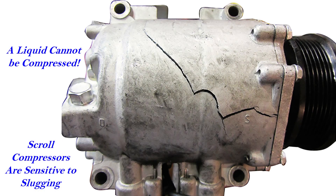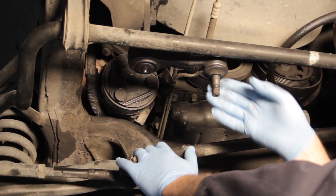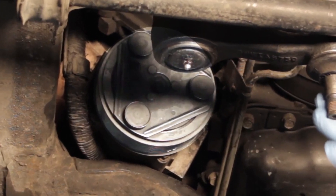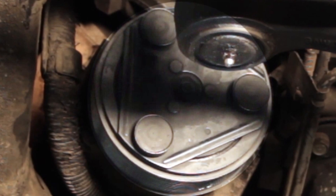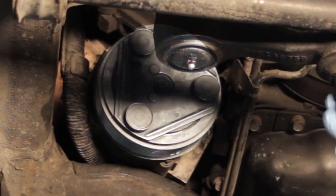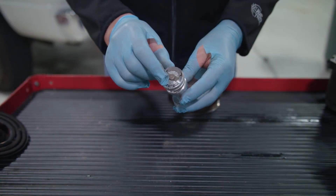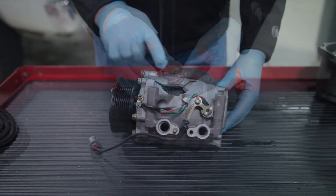A system overcharge, on the other hand, can result in equally catastrophic compressor damage by liquid locking or slugging the compressor. A liquid cannot be compressed; therefore any liquid entering the compressor can result in irreparable damage. Because the compressor is a significant source of noise and vibration, many manufacturers have mounted it low down in the engine bay, as far away from the occupants as possible. Any excess liquid, either refrigerant or oil, can easily drain down into the low-mounted compressor, causing catastrophic slugging. It is not uncommon to see broken reed valves or even a cracked case due to slugging.